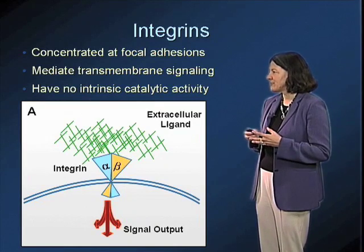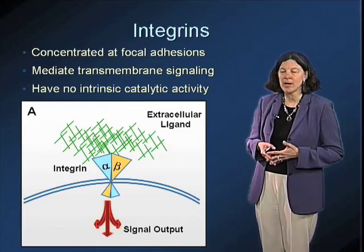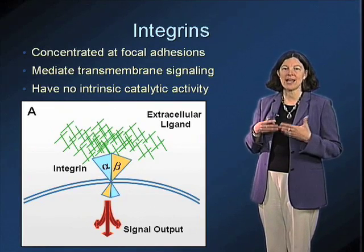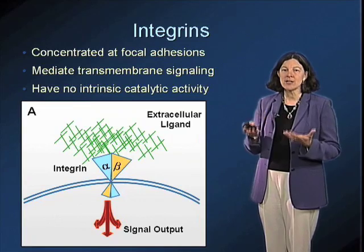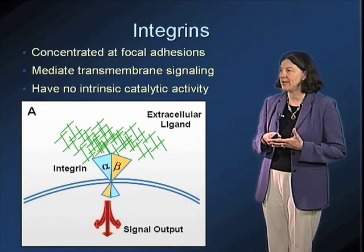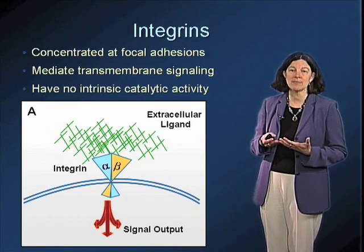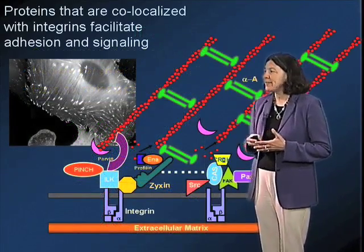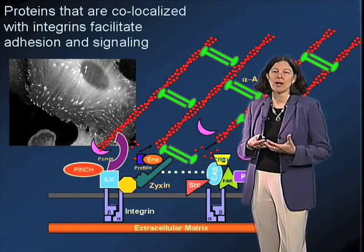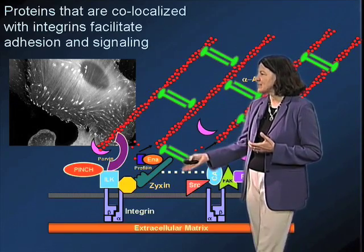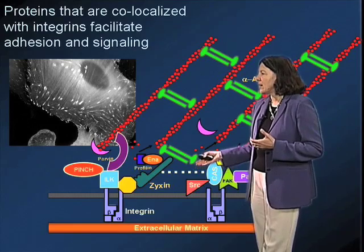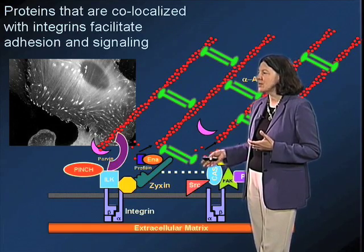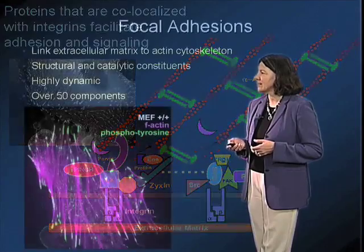Integrins are the primary receptors for extracellular matrix located at these specialized adhesion zones. They're concentrated at focal adhesions and mediate transmembrane bidirectional signaling. Unlike growth factor receptors, they don't have any intrinsic catalytic activity. Rather, they operate by recruitment of a large collection of cytoplasmic proteins to the cytoplasmic face of the plasma membrane, and it's these proteins which really facilitate integrin signaling function.